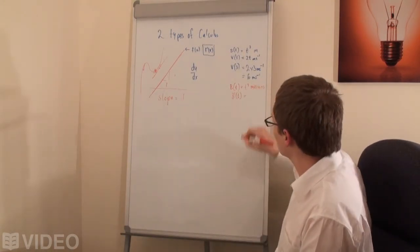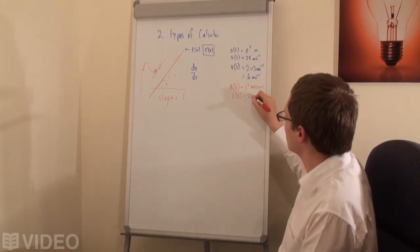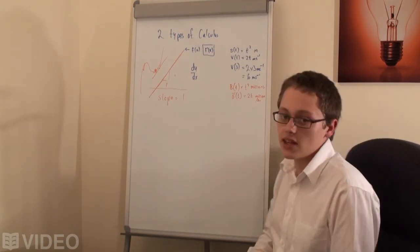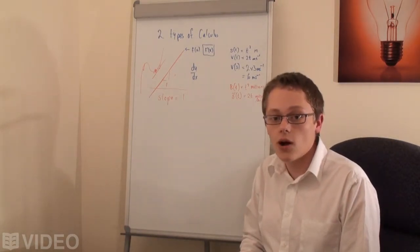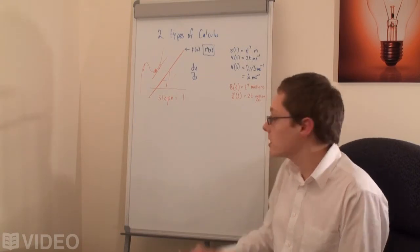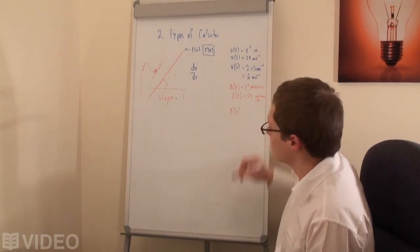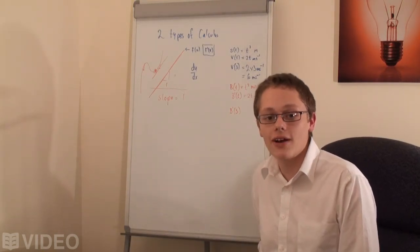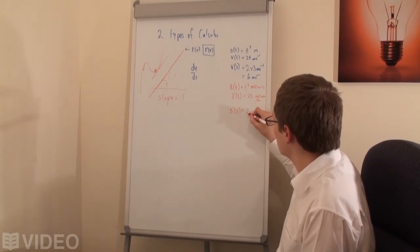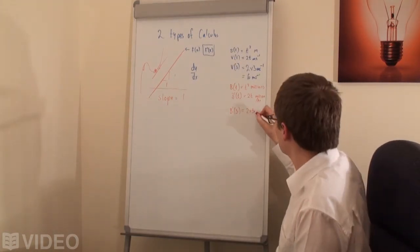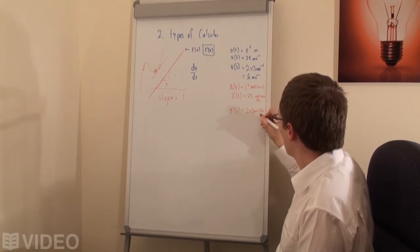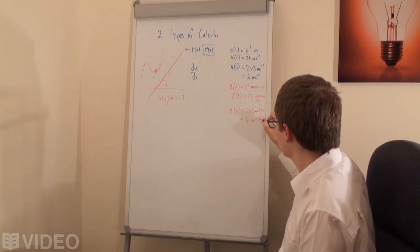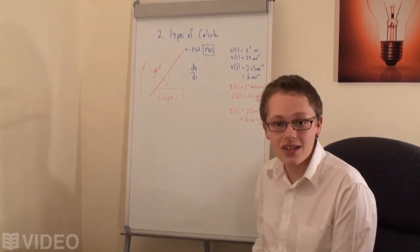I'll differentiate this function as I did above. And we know that two t million per hour is the rate of increase. So, we know that the b prime of three, hence the rate of change after three hours, the amount of increase in bacteria after three hours, is going to be equal to two times three million per hour. Which is going to equal six million per hour as an increase. And that's exponential growth.